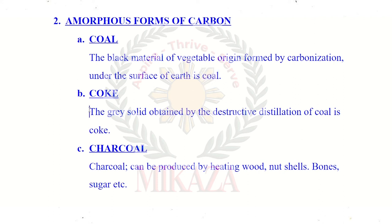Coke is the gray solid obtained by destructive distillation of coal. In destructive distillation, coal is heated in the absence of oxygen. When coal is heated without oxygen, it turns into a gray solid, and that solid is called coke.